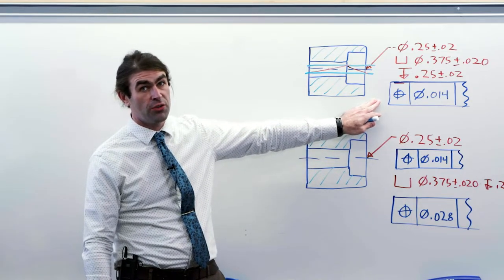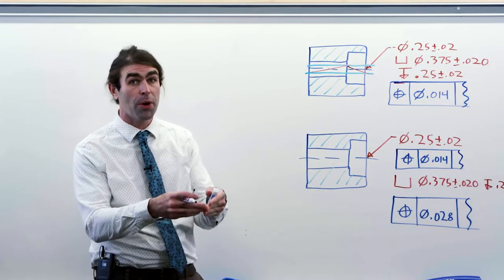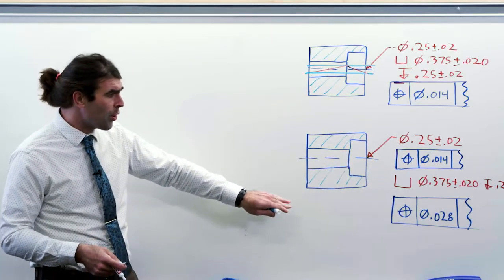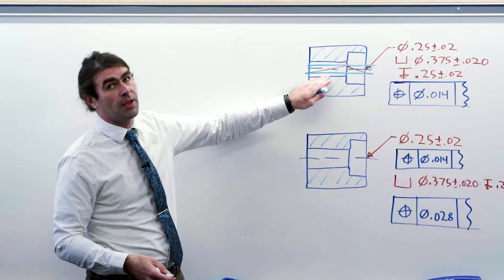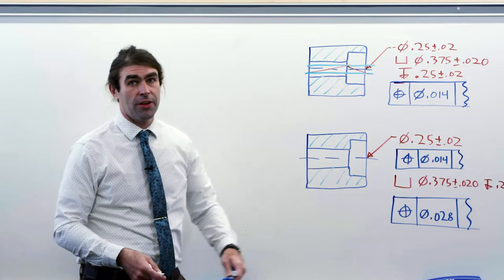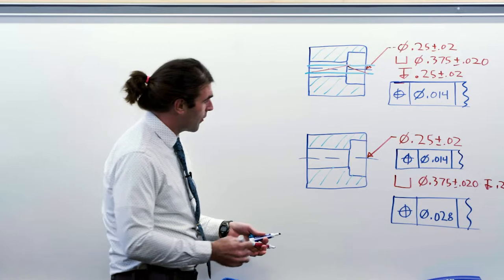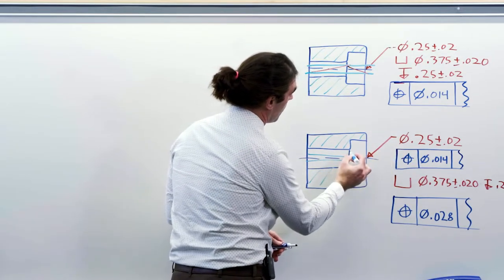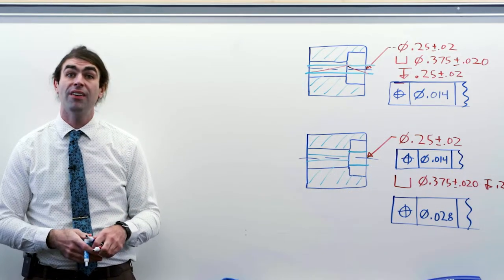You can think of this feature control frame as being repeated rather than controlling both features simultaneously — it controls them separately. At inspection, you get a gauge pin, put it in the through hole and check it, then get another gauge pin, put it in the counterbore and check it. You just have more tolerance for the counterbore. The tolerance zones look like a small zone for the through hole and a much larger zone for the counterbore feature.